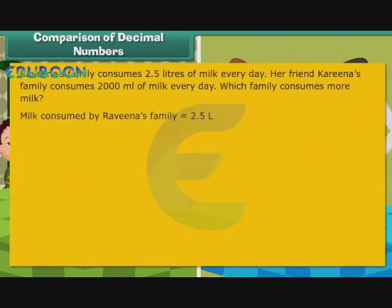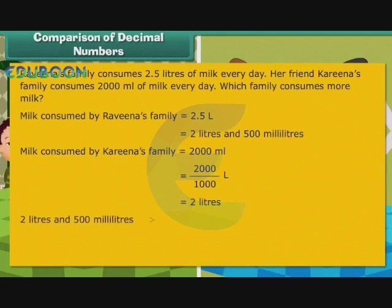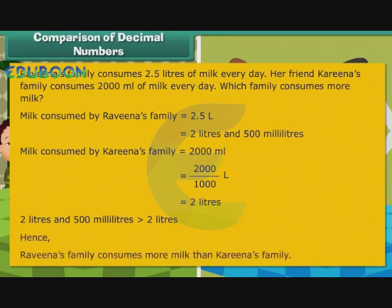Milk consumed by Ravina's family is 2.5 litres. Milk consumed by Karan's family is 2000 ml, which equals 2 litres. Since 2.5 litres is greater than 2 litres, Ravina's family consumes more milk than Karan's.